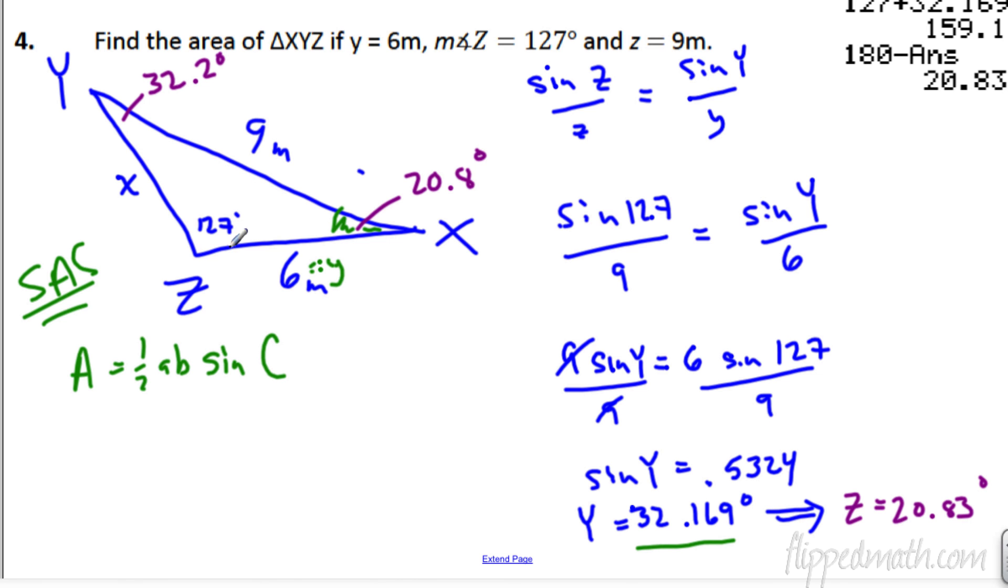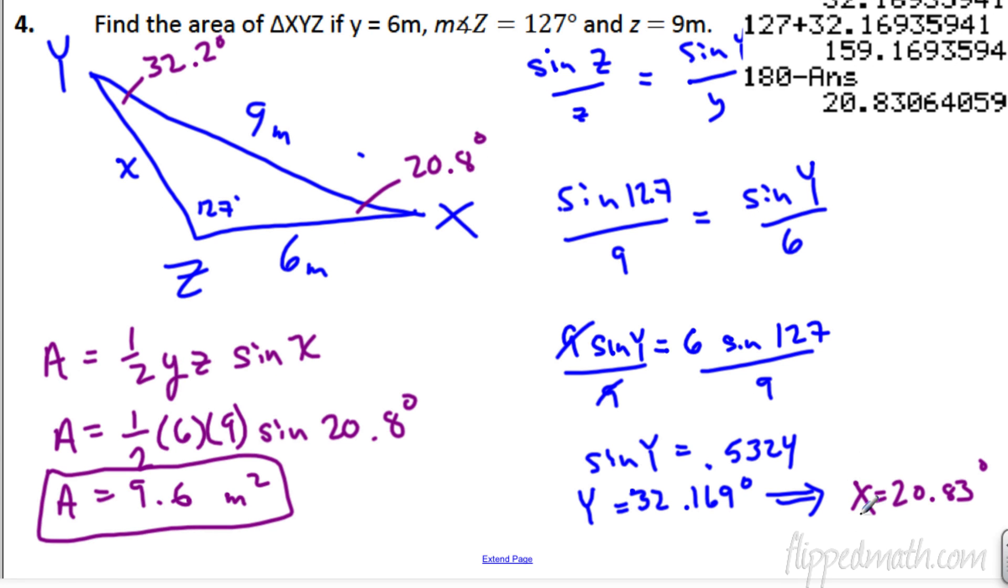Here's the work for it. You get Y equals 32.169 degrees. Because all the angles then add up to 180, we can find out what Z is. Once we know X, then we can use our formula. X equals 20.83. Now, we can use two sides in the angle that's included within it. So, we can put 6, 9, and then the sine of 20.8. We get the area there to be 9.6. We are done with those two. Try it on your own problems.